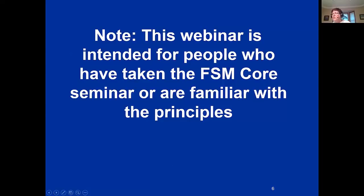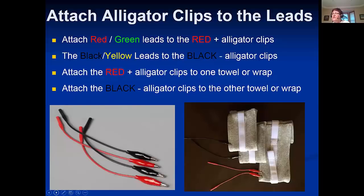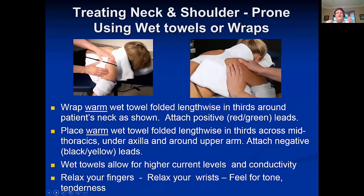When treating the neck and shoulder prone, there's a towel around the neck and one across the mid-back, going along the side under the axilla and around the upper arm. You've got the positive leads to the neck and the negative leads down the arm. The reason is that nerves go from the neck to the shoulder and control muscle tone absolutely — if you're going to treat the shoulder muscles, you have to treat the nerves that control those muscles.